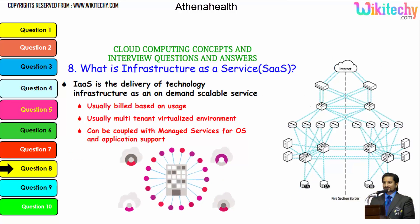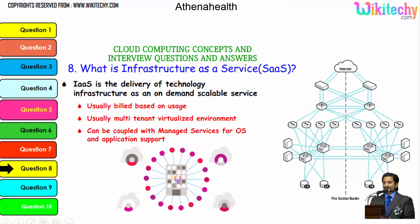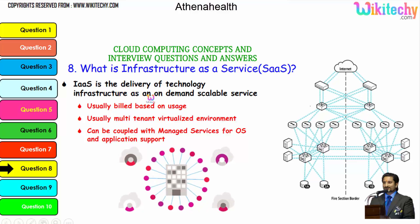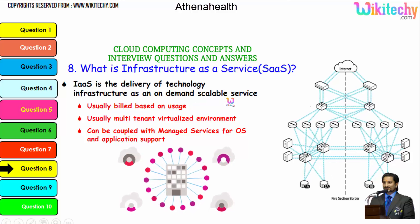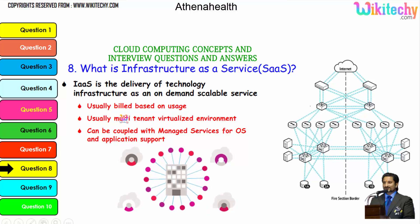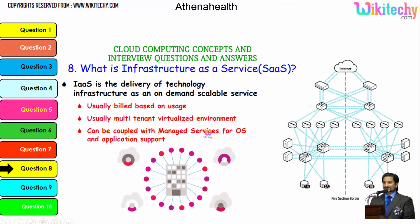Now let's talk about Infrastructure as a Service. You will be allocated a server, and whatever OS you want you can install, and whatever software you want you can put on it. IaaS is the delivery of technology infrastructure as an on-demand, scalable service, usually billed based on usage, and typically multi-tenant virtualized. It can be coupled with managed services for OS and application support.